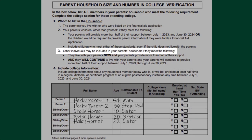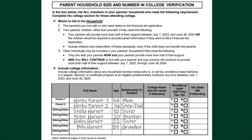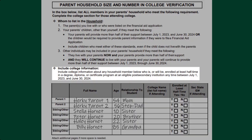You can also list any other individuals in your parent's household if they live with your parents and your parents provide more than half of their support right now and will continue to between July 1, 2023 through June 30, 2024. For each individual listed in this table, make sure to list if they will be attending college anytime between July 1, 2023 through June 30, 2024.